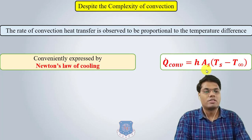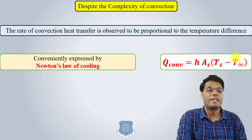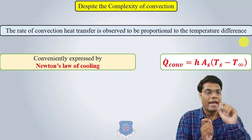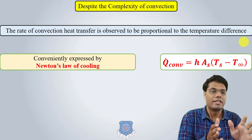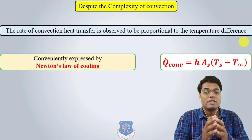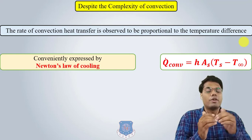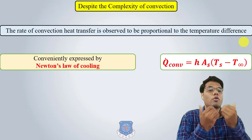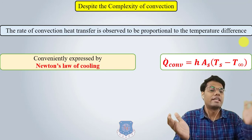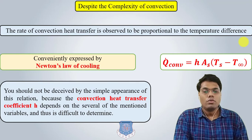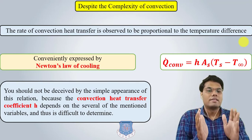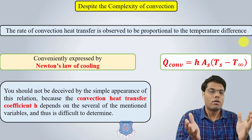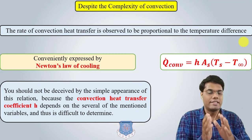In Newton's law of cooling, h is the convective heat transfer coefficient, A is the surface area, T_s is the surface temperature, and T is the surrounding temperature. You should not be deceived by the simple appearance of this relation because the convective heat transfer coefficient h depends on several variables and is thus difficult to determine.